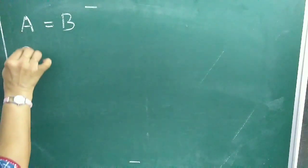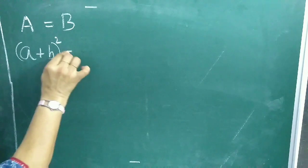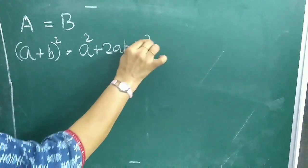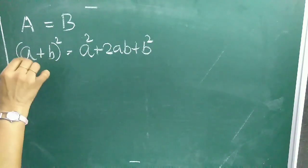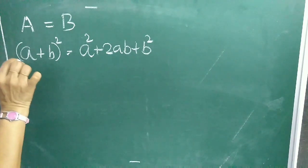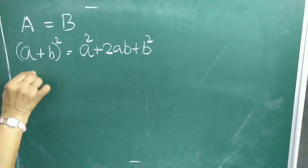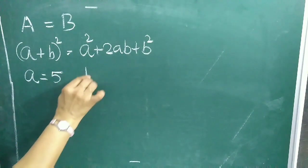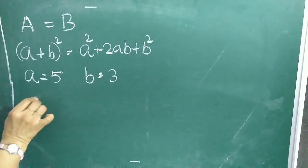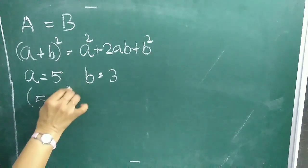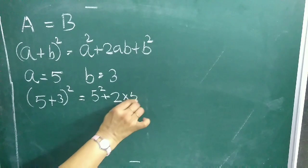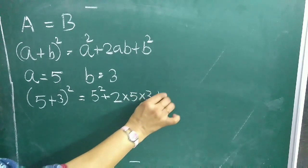Consider an example: (a + b)² = a² + 2ab + b². This is the first identity, and here a and b are the variables. When we put some values for these variables — for example a = 5 and b = 3 — we get (5 + 3)² = 5² + 2 × 5 × 3 + 3².